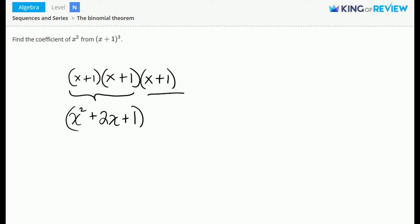And then we still have this (x + 1) here. Now we'll multiply the x times each of these three items, followed by the one times each of these three items here.